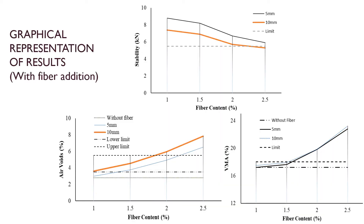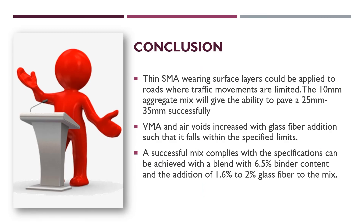This is a graphical representation of results obtained for specimens with 6.5% bitumen content and fiber addition. In all graphs, separate plots are drawn for 5 mm and 10 mm fiber lengths, with specified limits marked in dotted lines. In the stability graph, we can see that up to 2% of fiber content the stability criteria is satisfied. For air voids, after 1.5% of fiber content the specification limits are satisfied. Most importantly, for VMA, after 1.6% of fiber content the minimum VMA criteria is satisfied.